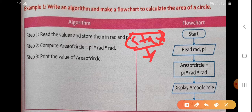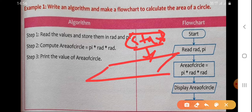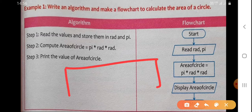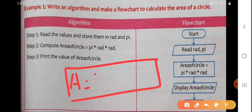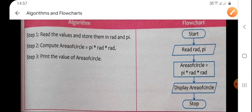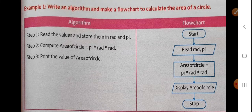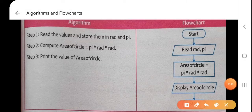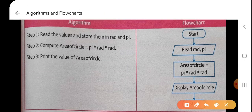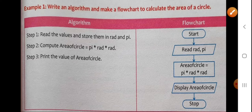Then comes the input box, where we input the values of 'rad' and 'pi'. Next, following the flow line downward, we calculate the area of a circle in a processing box: area = pi into rad into rad. Then comes the output box — display or print the area of a circle. And finally we stop. This is the simple flowchart for calculating the area of a circle.